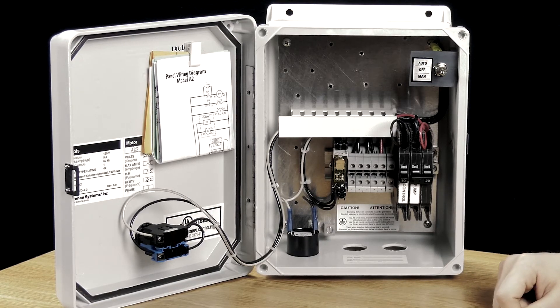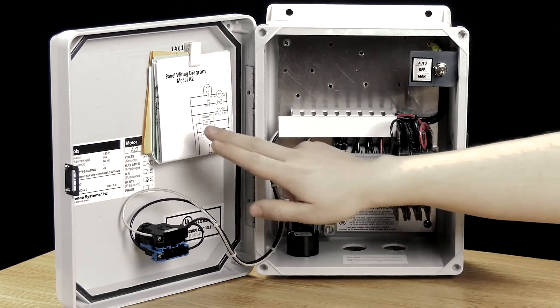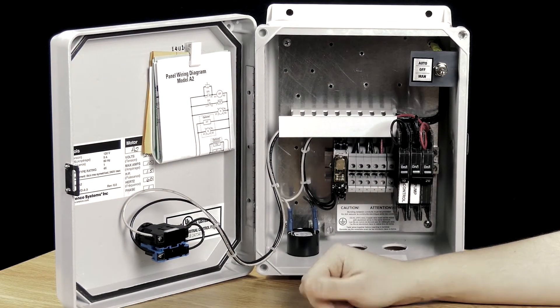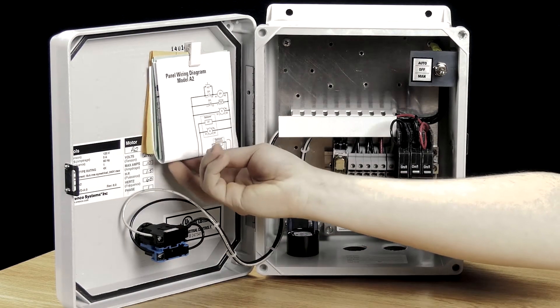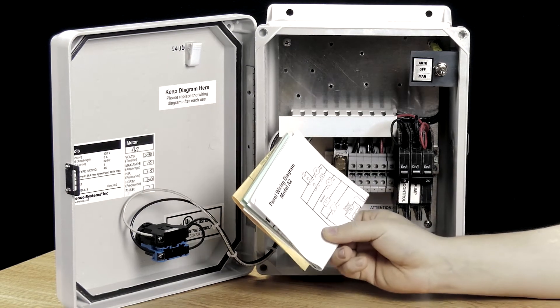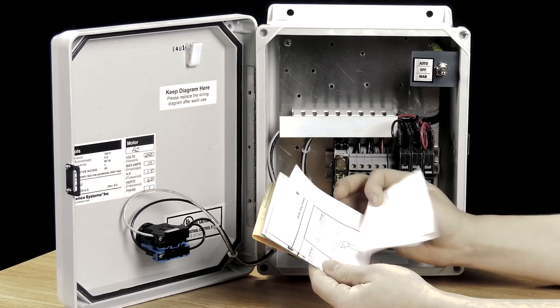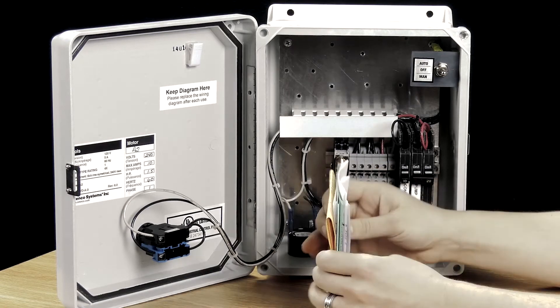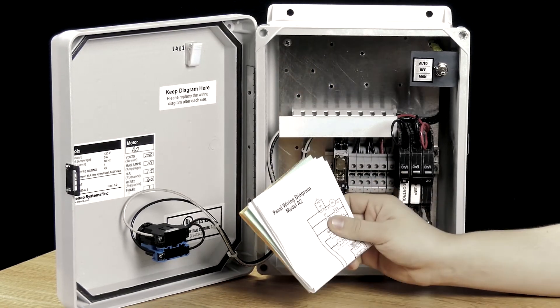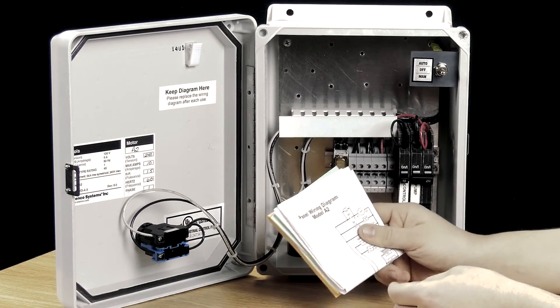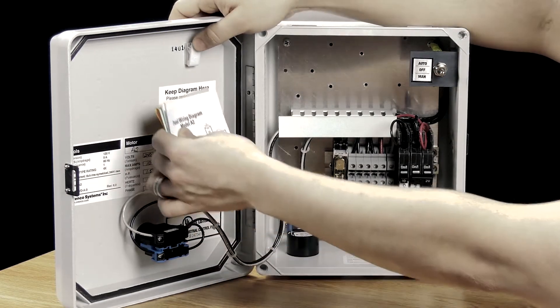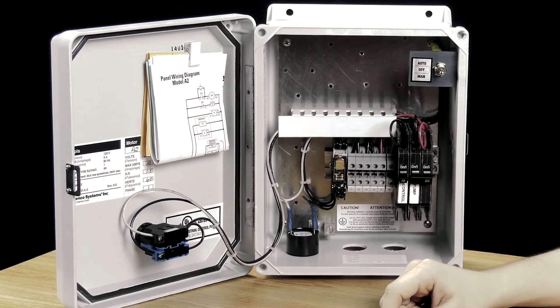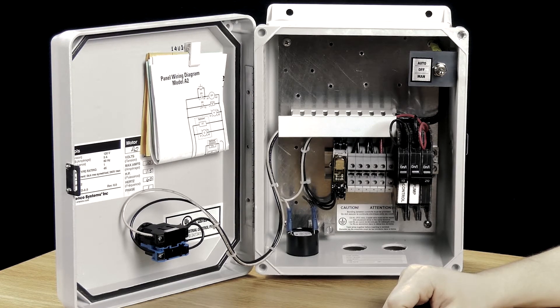Another great feature of Orenco control panels that sets them apart from many of their competitors is that they offer this extremely convenient panel information right inside the door. I think that's notable because what you've got here is a number of documents actually clipped inside of the panel. So we've got a wiring diagram, we've got a float arrangement diagram, some installation instructions, all extremely useful documents both for installation and for troubleshooting. Keeping those handy and inside the panel is going to benefit anybody involved in this control panel.